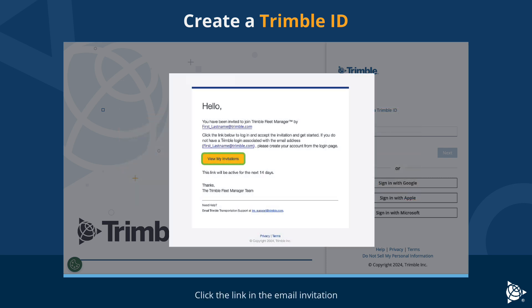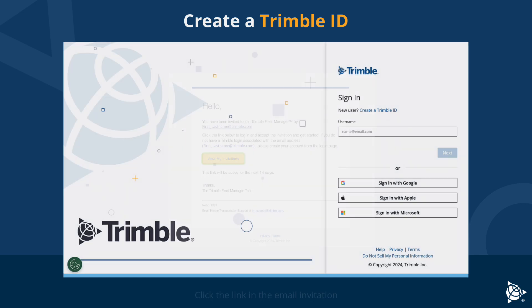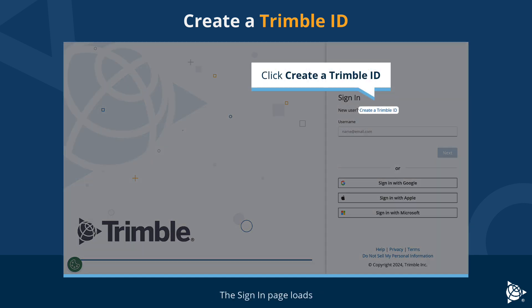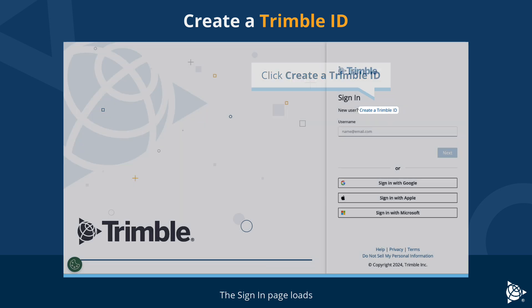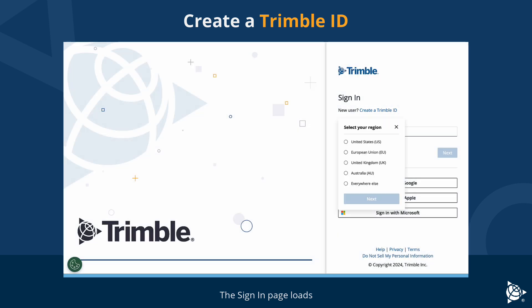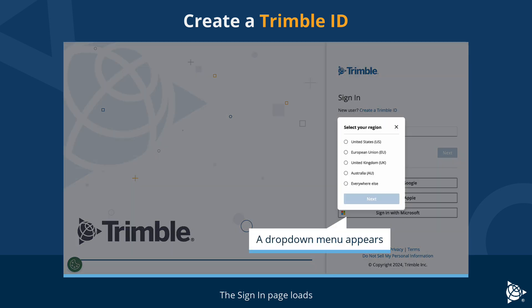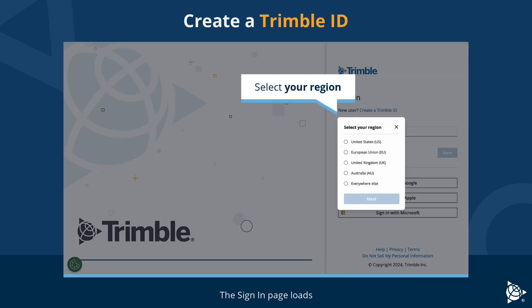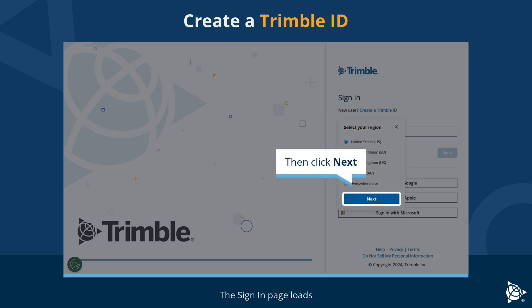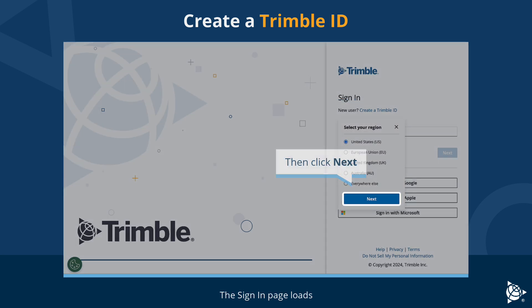Click the link in the email invitation. The sign-in page loads. Click 'Create a Trimble ID.' A drop-down menu appears. Select your region, then click Next.